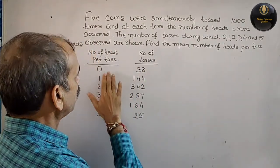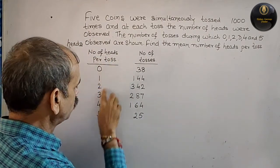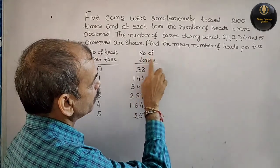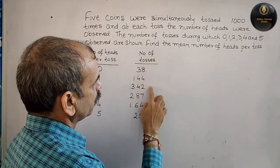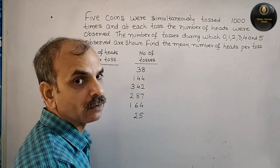Now see what we have. Number of heads per toss is 0 to 5, and here they have given number of tosses: 38, 144, 342, 287, 164, and 25.